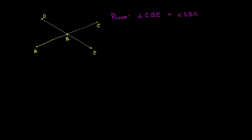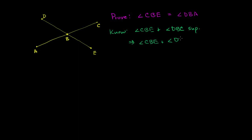So the first thing we know: angle CBE and angle DBC are supplementary. They are adjacent angles and their outer sides form a straight angle. So we know that angle CBE plus angle DBC is equal to 180 degrees.